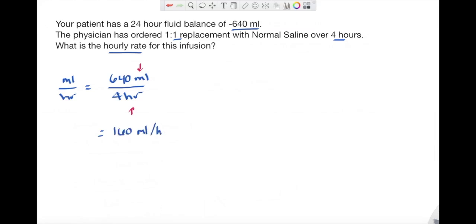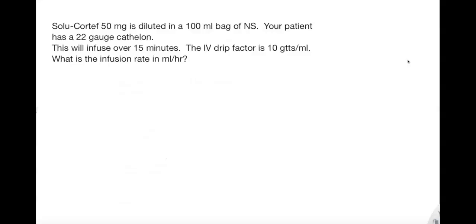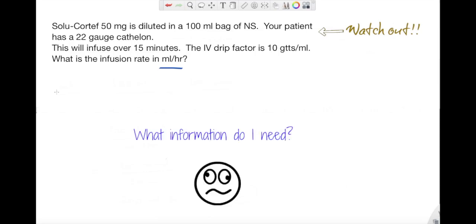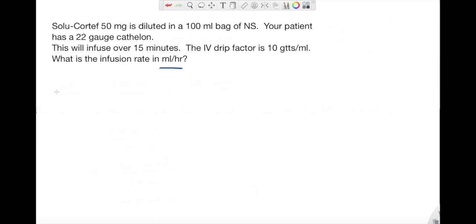All right, in this question we need to be careful and watch out for information that we don't need. So I always start out with what do I need to know. In my last sentence: what is the infusion rate in mLs per hour? So I'm looking for volume over time.